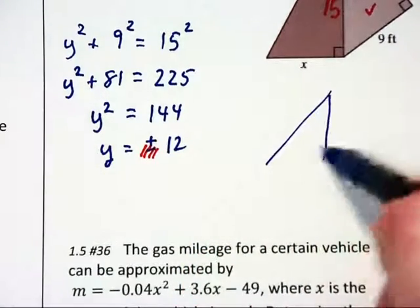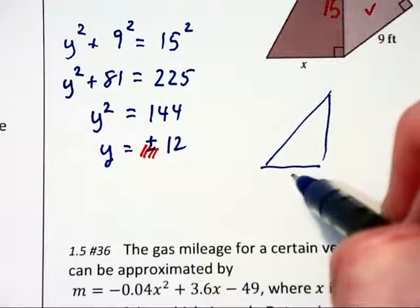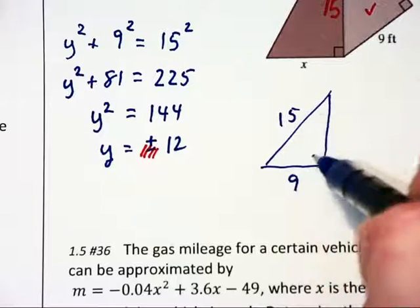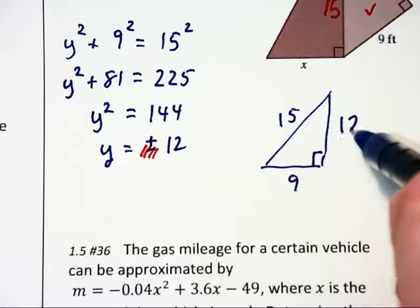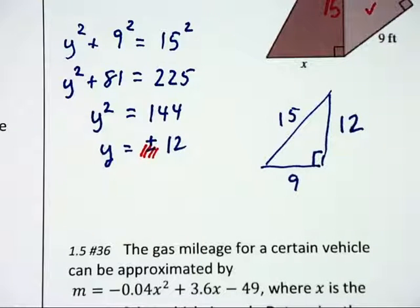y will equal plus or minus 12. But we know the negative will not make any sense in this circumstance. So we have our triangle with sides 9 and 15 already known, and we just solved to find that the height is 12.